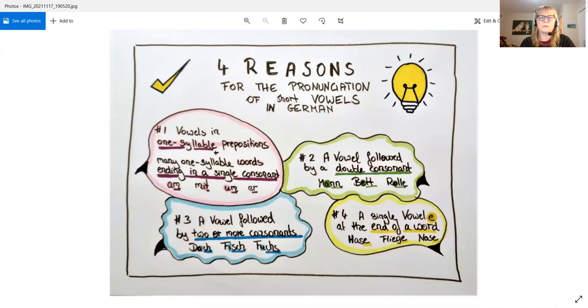Number three: a vowel followed by two or more consonants. Dach, Fisch, Fuchs. Dach, Fisch, Fuchs. And number four: a single vowel e at the end of a word.